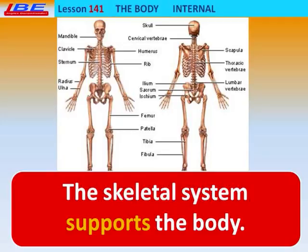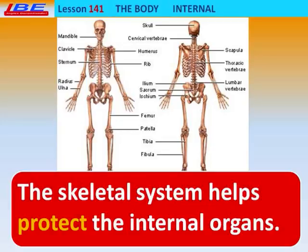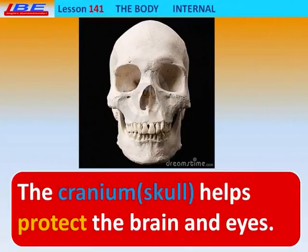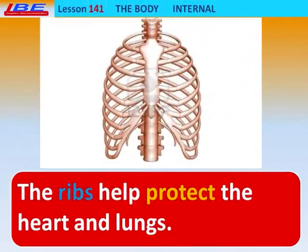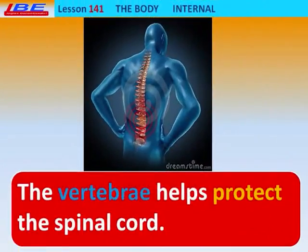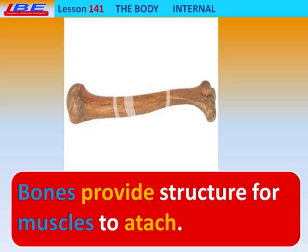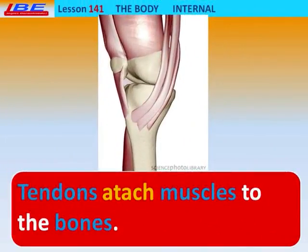The skeletal system supports the body. The skeletal system helps protect the internal organs. The cranium skull helps protect the brain and eyes. The ribs help protect the heart and lungs. The vertebrae helps protect the spinal cord.